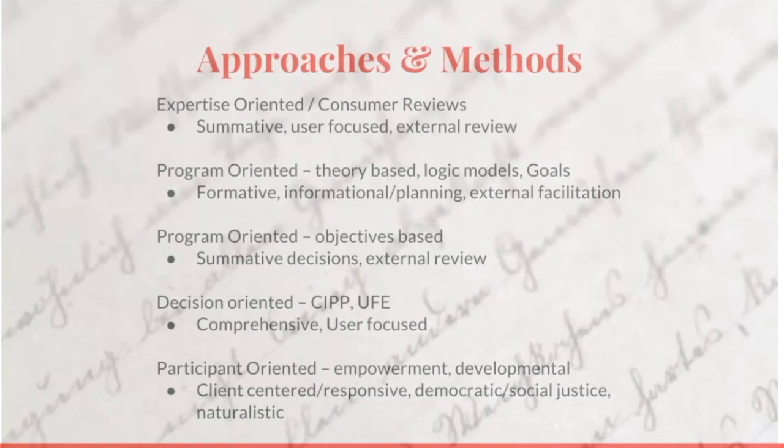A decisions-oriented model, like SIPP or UFE, are usually more comprehensive and user-focused, and a participant-oriented model is usually focused on empowerment. It's more developmental. The idea is ensuring social justice, being more naturalistic. So it's a lot to think about here. How do you know what's best for you?